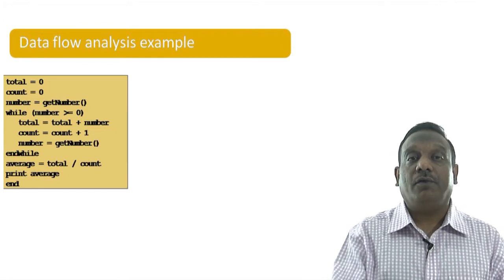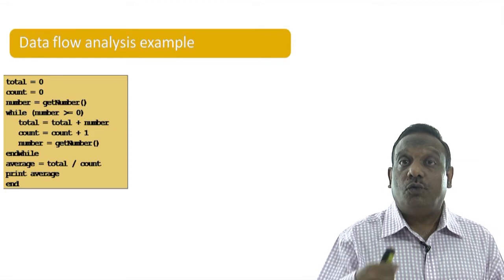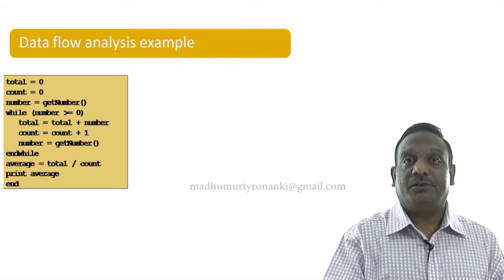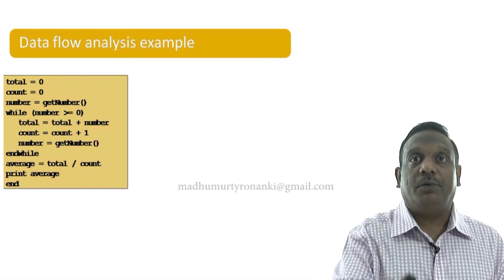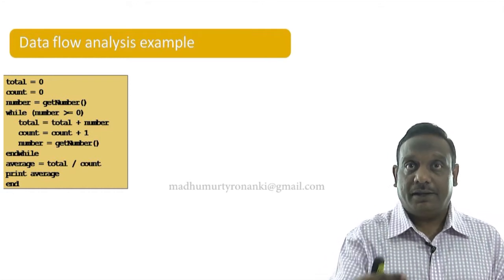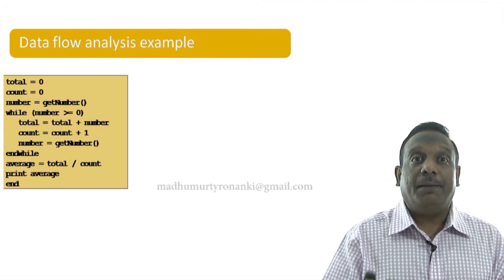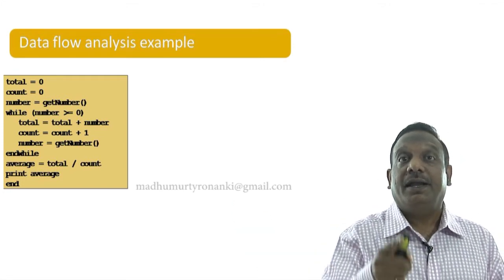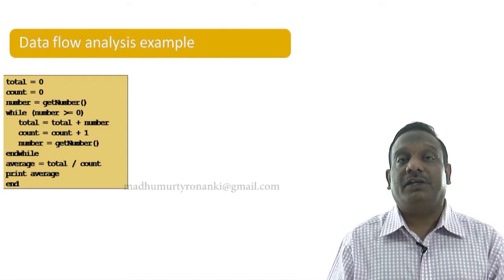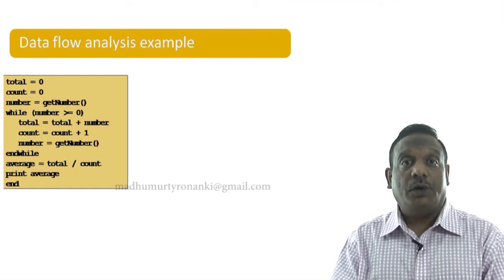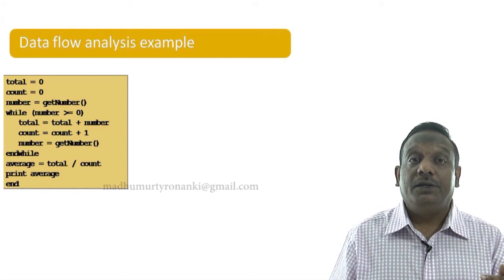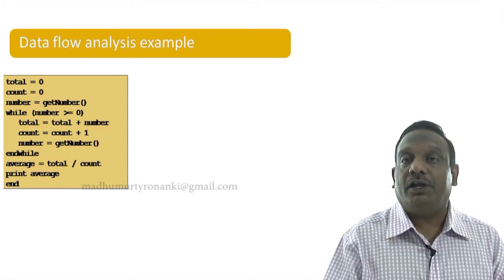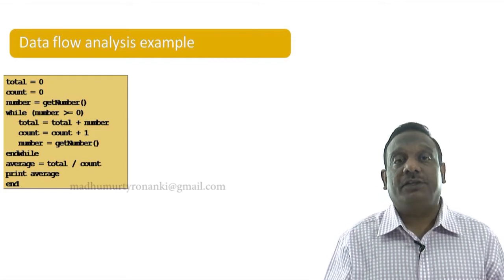On your screen you have a piece of source code. Let us identify the variables. There is a variable called 'total', which has been assigned the value zero. Another variable is 'count', also defined. Then 'number' is another variable being defined by reading from outside. Looking at the while statement, 'number >= 0' — that is where number is being used. There are also variables 'count' and 'average' — all these are variables inside the program, and studying them is data flow study.